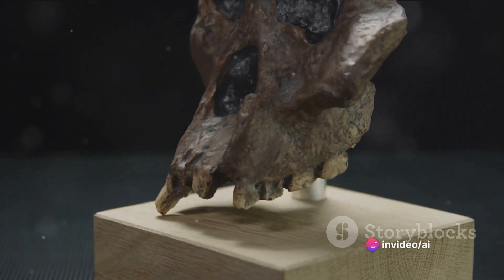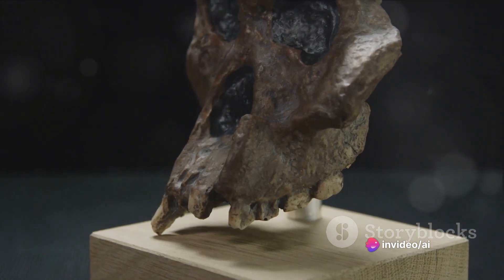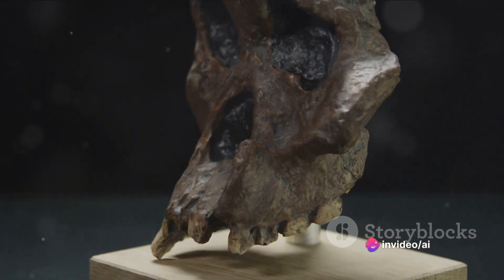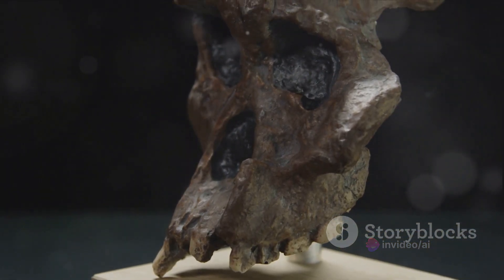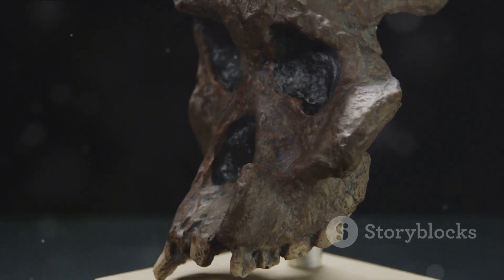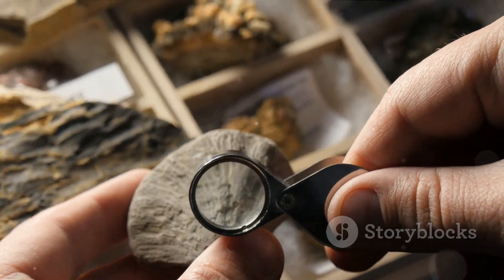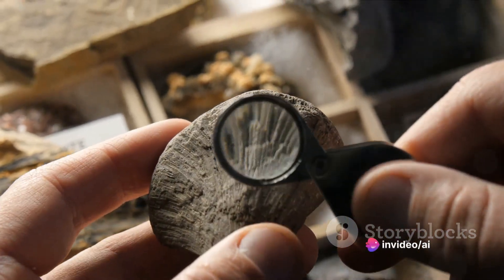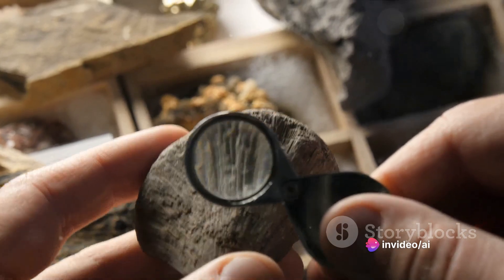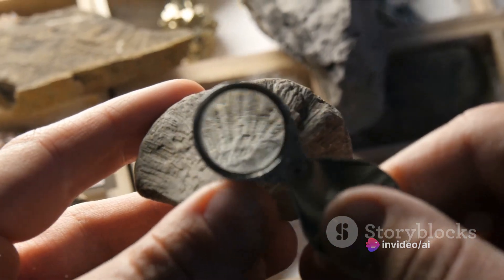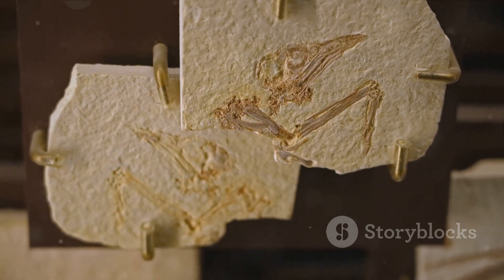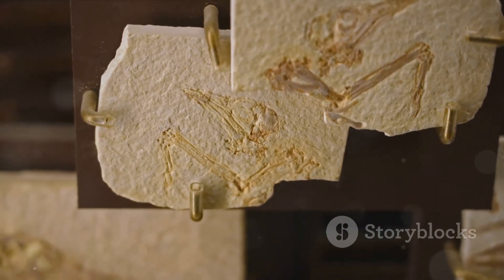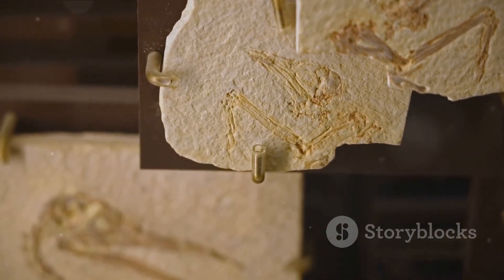It's a theory that's backed by a wealth of evidence from a broad range of scientific fields, from paleontology to genetics and from embryology to biogeography. Fossil records provide us with snapshots of the past, showing us the existence of creatures that no longer exist today but bear striking similarities to modern species. Genetics offers us a window into the relationships between different species, revealing a shared ancestry going back millions of years.